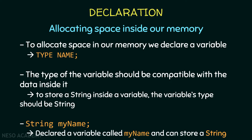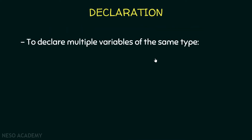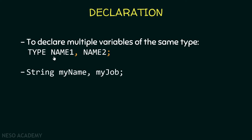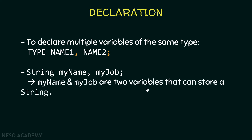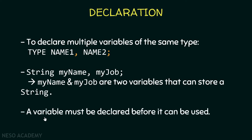If we want to declare multiple variables of the same type, we put the type, leave a space, then put the name of the first variable, followed by a comma and the name of the second variable — adding more with commas as needed — and end with a semicolon. For example, I'm declaring variables of type String: myName and myJob, so both can store a string. Note that a variable must be declared before it can be used, because in order to store data in memory, we have to allocate space by declaring a variable.